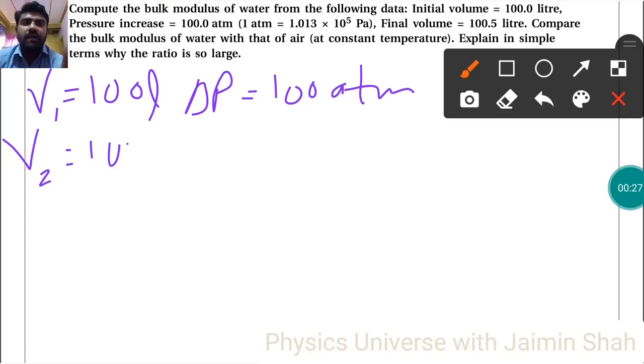V2 equals 100.5 liters. To convert 100 atmospheres into Pascal, we know that 1 atmosphere equals 1.013 × 10^5 Pascal. So we multiply by that value, 1.013 × 10^5 Pascal.